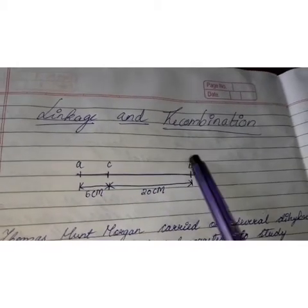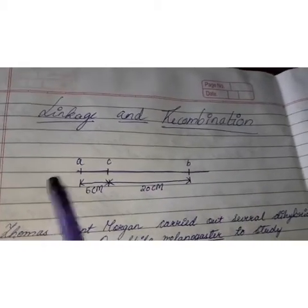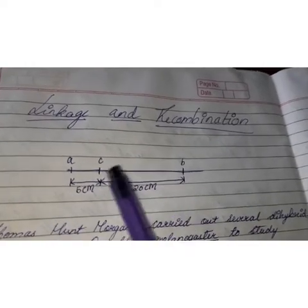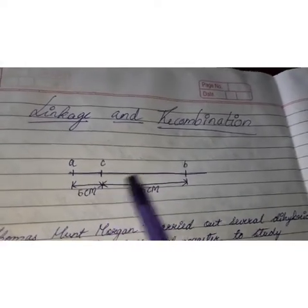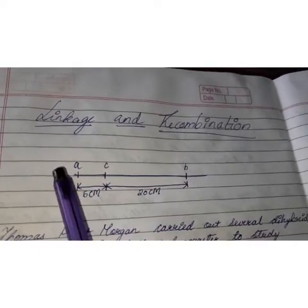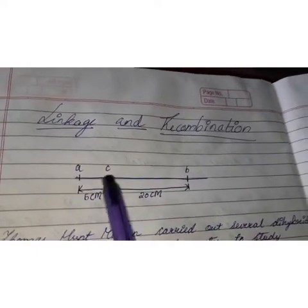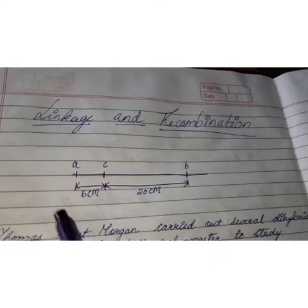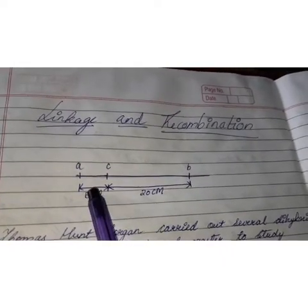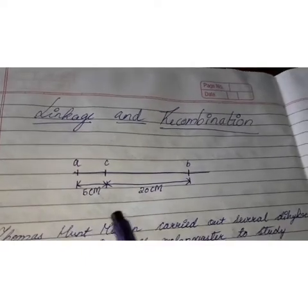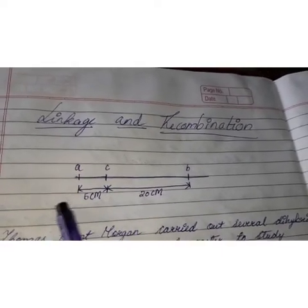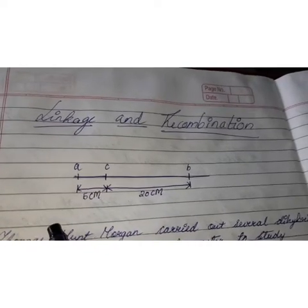Gene A and C are located at a distance of 5 centimorgan, whereas gene C and B are located at a distance of 20 centimorgan. Since A and C are located very close to each other, the chances of recombination between A and C are less, and the chances of linkage or transmission of these two genes together is high.